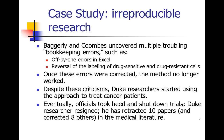It was a completely irreproducible approach — their method did not work if you analyzed the data correctly. Baggerly and Coombs tried to bring up these criticisms and get people to listen to them, but it took them a while to get anybody to pay attention. In the meantime, the Duke researchers actually started using the approach to treat cancer patients in clinical trials — now they're actually treating patients based on something that doesn't work.